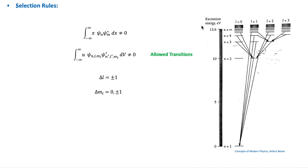This figure shows the energy diagram in a hydrogen atom and illustrates the allowed transitions. As you can see, only those transitions where L differs by plus or minus one can occur.